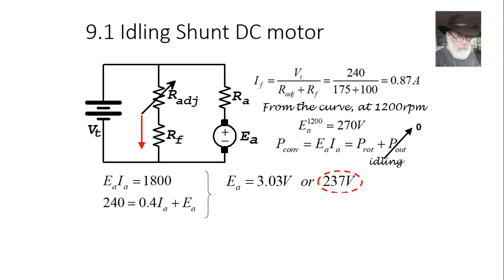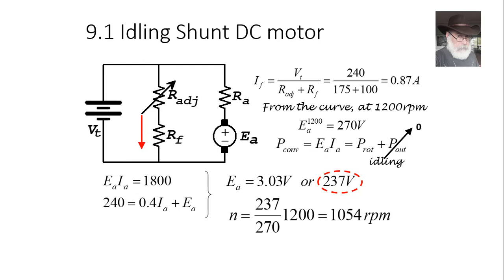The magnetization curve says 270 volts, but our computation gives 237 volts — these differ because the speed is different. With that excitation of 0.87 amperes, the curve is referenced to 1200 RPM giving 270 V, but our lower Ea of 237 V means the machine is rotating at a lower speed. By proportionality, the actual idling speed is 1054 RPM.